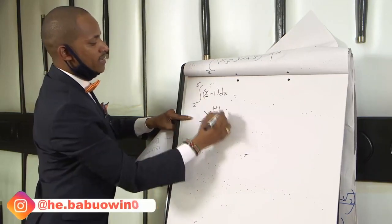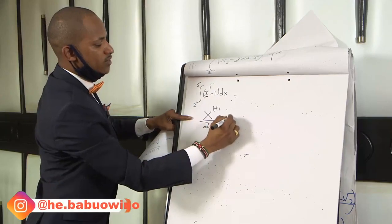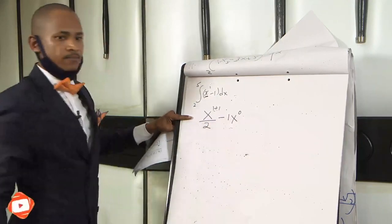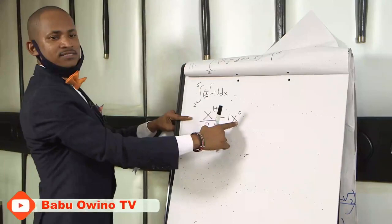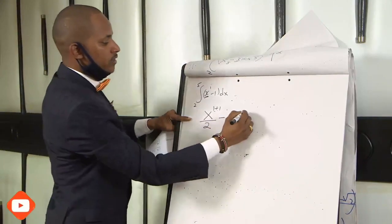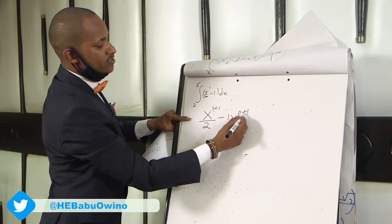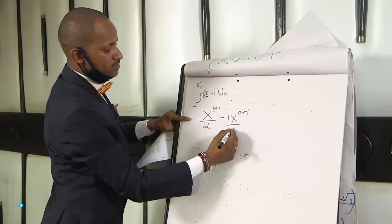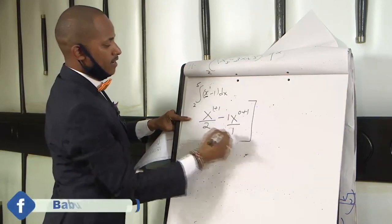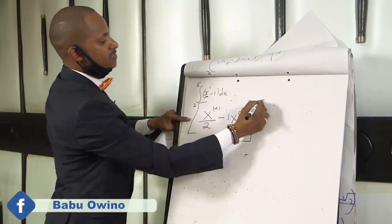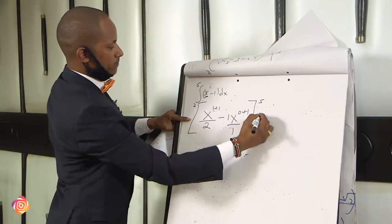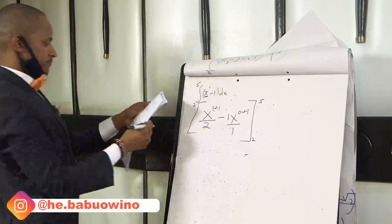Then minus. Remember here we have 1. 1 can also be written as 1 times x raised to power 0. So 1 can be written as x raised to power 0. You add 1. Then divide it by that value that you get, 0 plus 1 is 1. And now our limits here are 5 and 2.